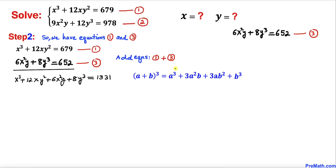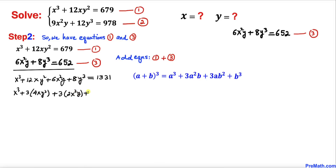Now let's recall the famous identity (a + b)³. We are going to manipulate the left-hand side to apply this identity. The left-hand side can be written as x³ + 3·(4xy²) + 3·(2x²y) + (2y)³, which equals 1331. Note that 1331 = 11³.